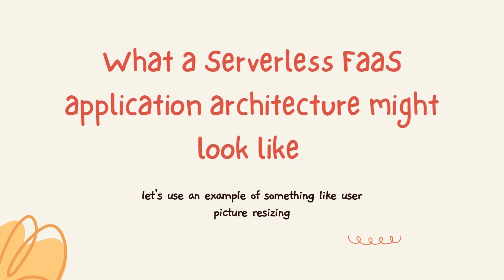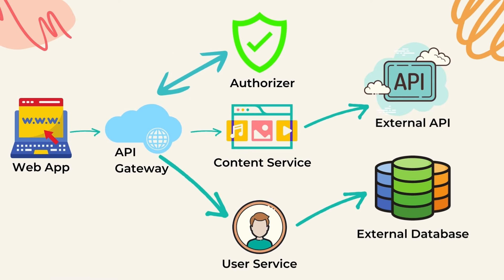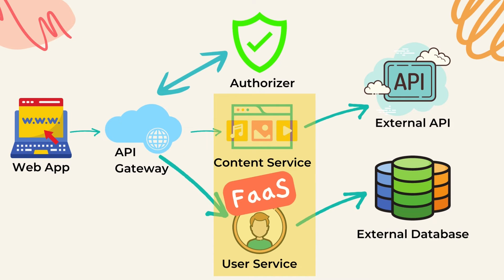Let's take a look at what a Serverless FaaS application architecture might look like, using the example of User Picture Resizing. We start with our client interacting with a web app based on Serverless architecture. The web app interacts with an API Gateway, which routes towards a Content Service and a User Service. Content Service interacts with an external API, and User Service interacts with an external database. Both Content Service and User Service can be implemented using Function as a Service.